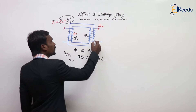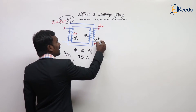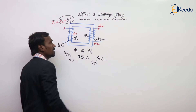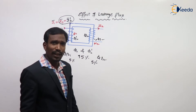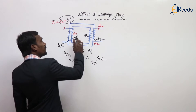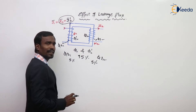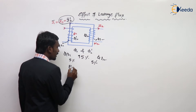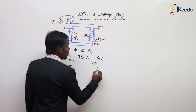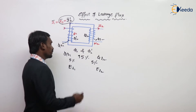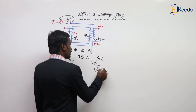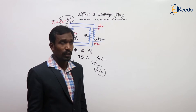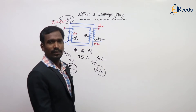The remaining 5% of flux is called the Leakage Flux of the Primary and Leakage Flux of the Secondary. Due to this leakage flux — present in both primary and secondary — some EMF is induced, which is called Leakage EMF, denoted as E1 and E2.